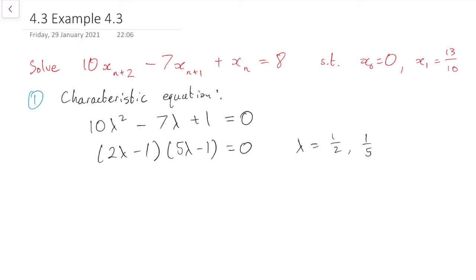You'd get the same solutions if you use the formula. Which means that the general solution to the homogeneous equation, the one with a 0 on the right-hand side, is xn = A(1/2)^n + B(1/5)^n. So that's step 1.